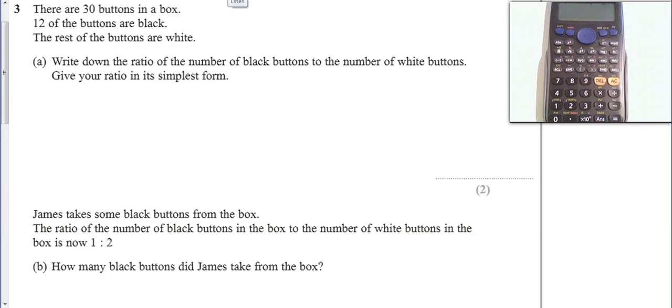Okay, question number three. So we have here, it says there's 30 buttons in the box, 12 are black. The ratio of black to white - if I just set that out, that's 12 black.